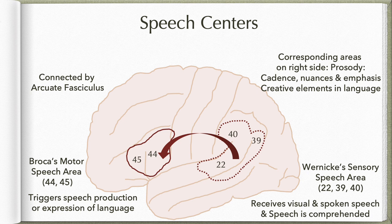The right side is also involved in nuances — the different shades of meaning of words. For example: I am upset with you, I am angry with you, I am furious with you, I am hopping mad with you — these are different gradations which it is capable of understanding. It is also involved in understanding emphasis — whether there is a question mark or an exclamatory mark associated with a sentence.